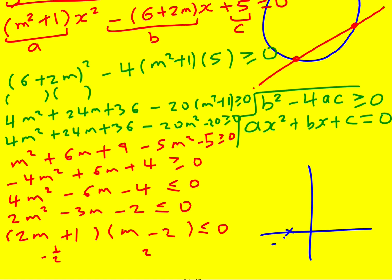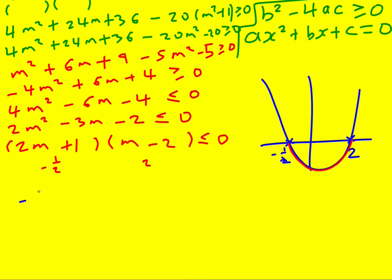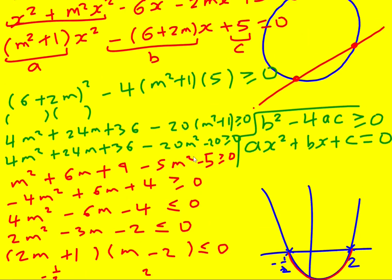So minus a half and two. It's going to come down a bit like this. We're interested in where it is less than equal to zero. It's going to be this range here, so it's going to be in between these values including minus a half and two. Therefore minus a half is less than or equal to m less than or equal to two. And we're sorted. Quite a lot of effort there.